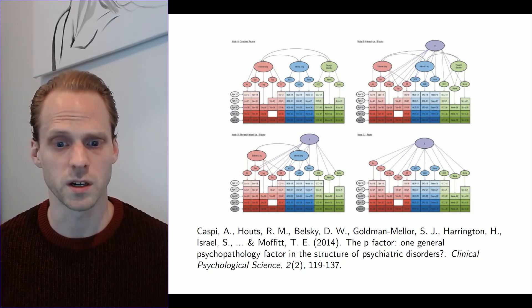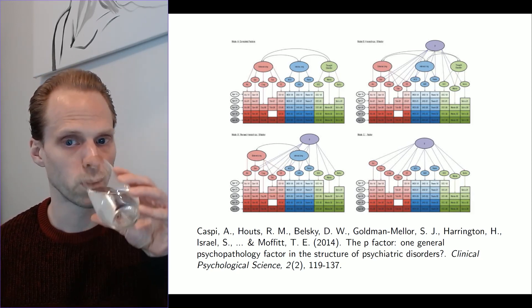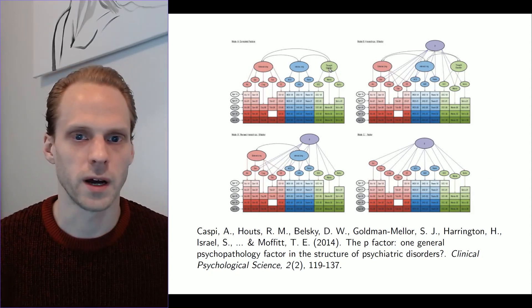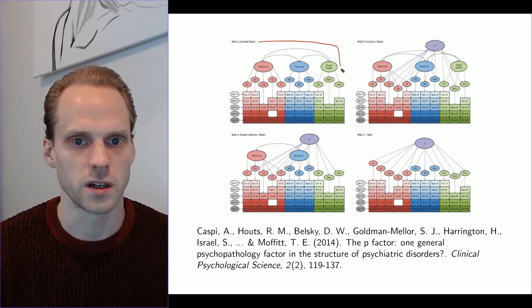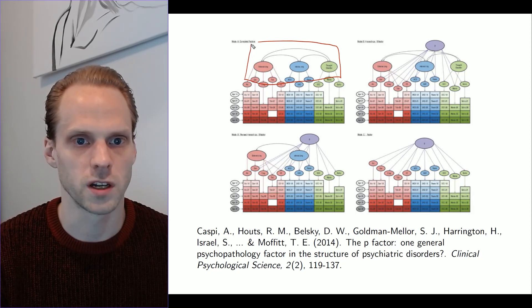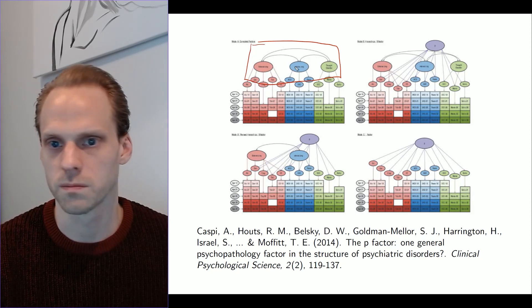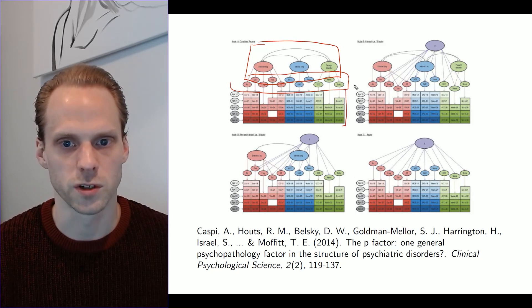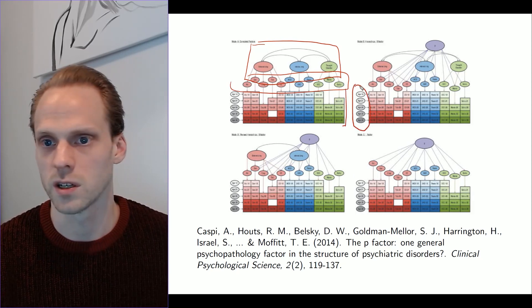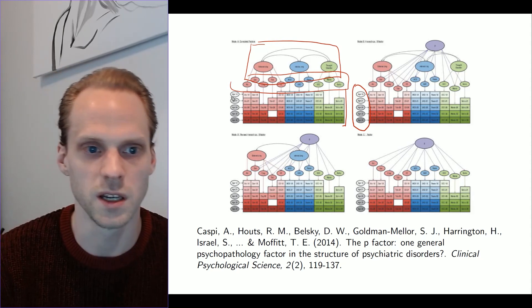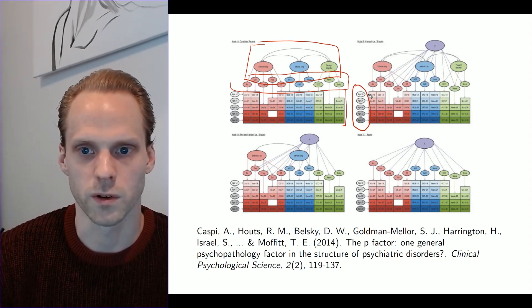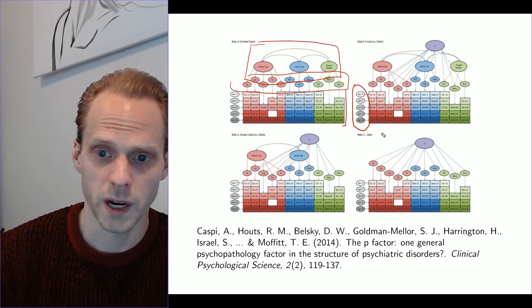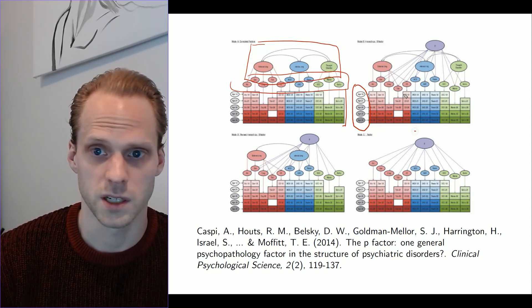So one example here would be the P-factor model, which you may have heard of, which is all about this. So they were comparing between internalizing, externalizing, and thought disorders. These are disorders measured over different years. There's also a thing called method factors that I'm not really describing. But basically, this is a common factor for the same age range. And then they were comparing a higher-order model. This is a bifactor model with correlations here, which is a bit weird, but okay.